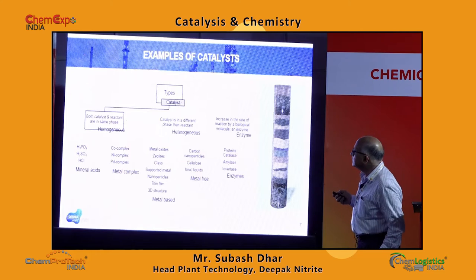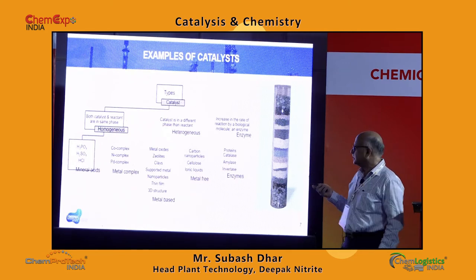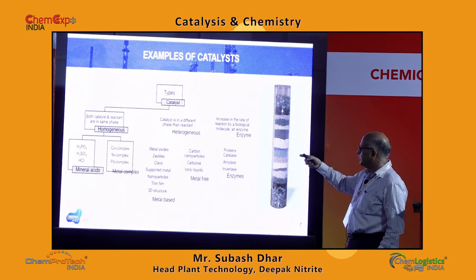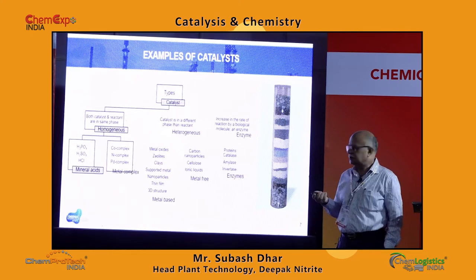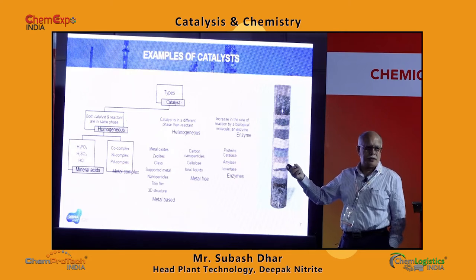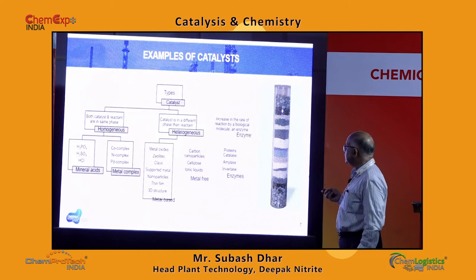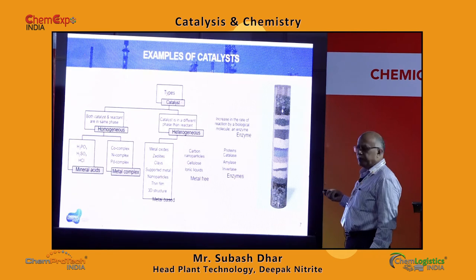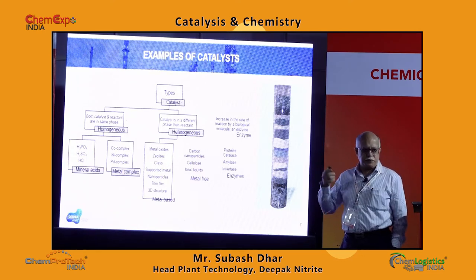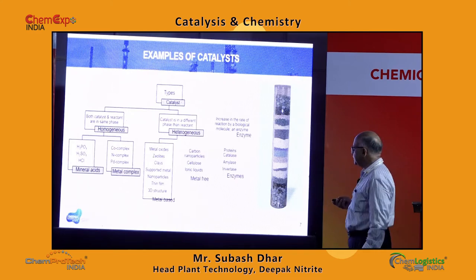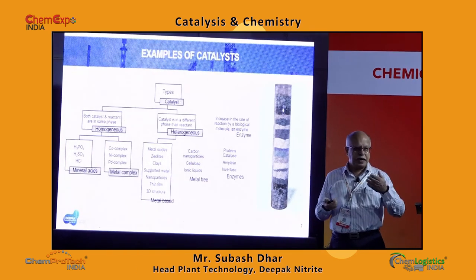In homogeneous catalysts you have various acids and metal complexes like nickel, palladium, and cobalt acetate — all in solution added to a liquid phase. In heterogeneous catalysts, where the catalyst is in a different phase, you have metal oxides, zeolites, some clays, supported metals, and nanoparticle-based catalysts where nanonization changes the surface energy making them active. There are also emerging thin-film 3D structures, currently at an experimental stage.